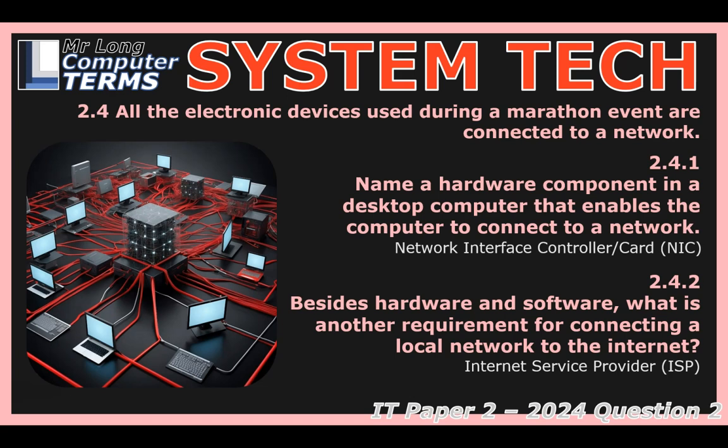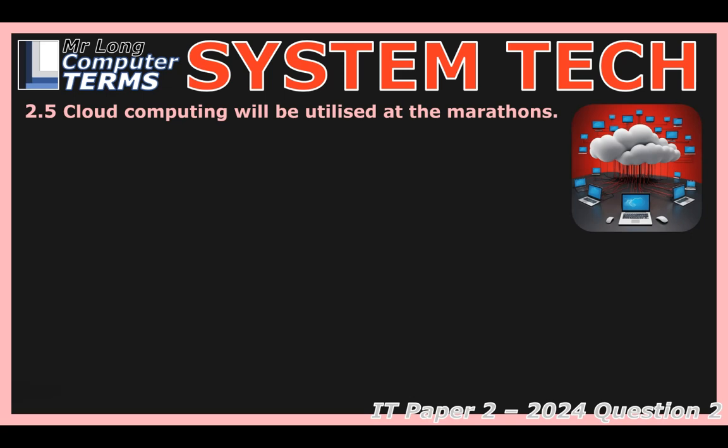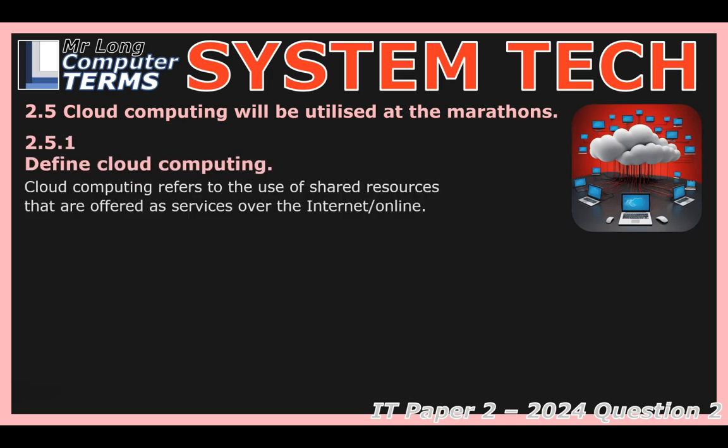That applies whether you're running a marathon broadcast or just checking email at home. Now let's touch on cloud computing. At its heart, cloud computing is about using shared computing resources — processing power, storage space, databases, software — delivered as services over the Internet. Instead of buying and managing all your own servers and software, you rent access to those resources from a cloud provider like Amazon, Google, or Microsoft, usually on a pay-as-you-go basis. Think of it like electricity — you just plug in and use what you need.